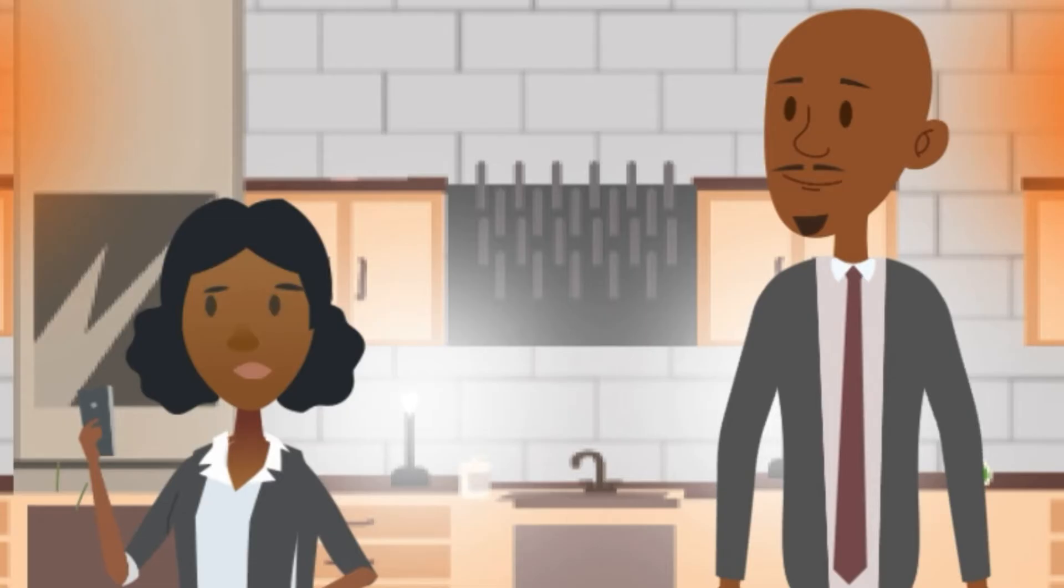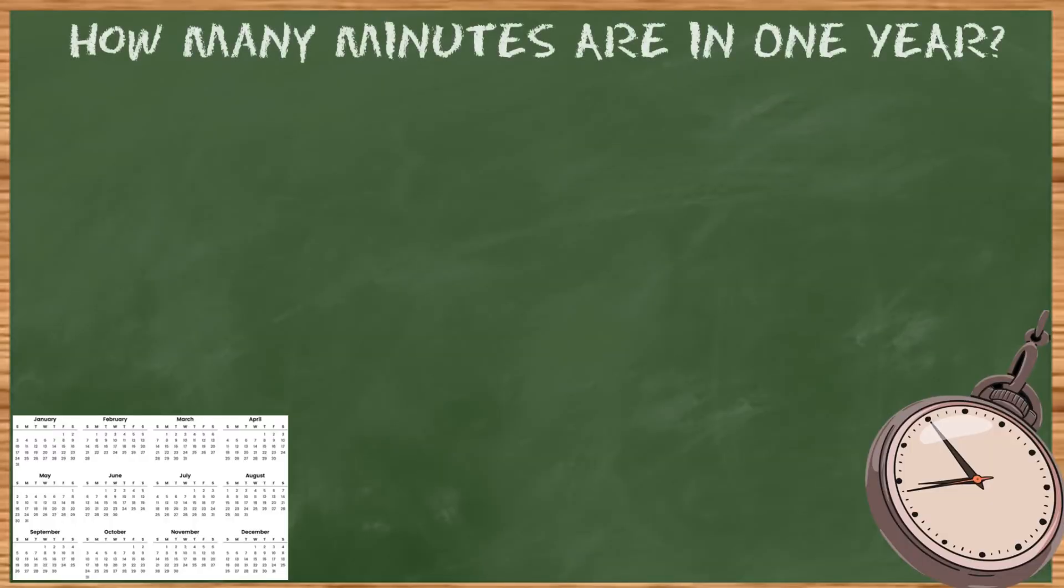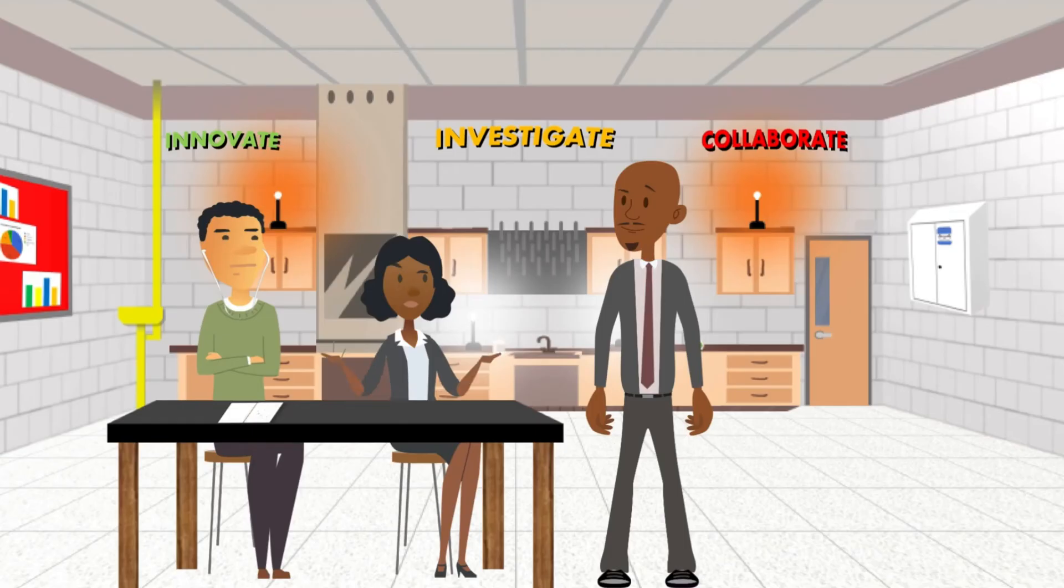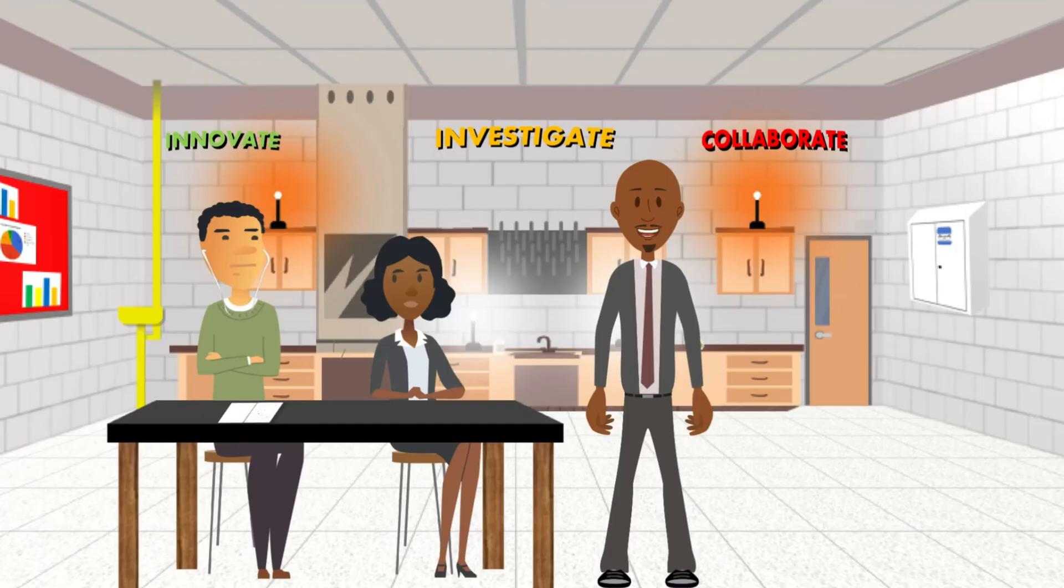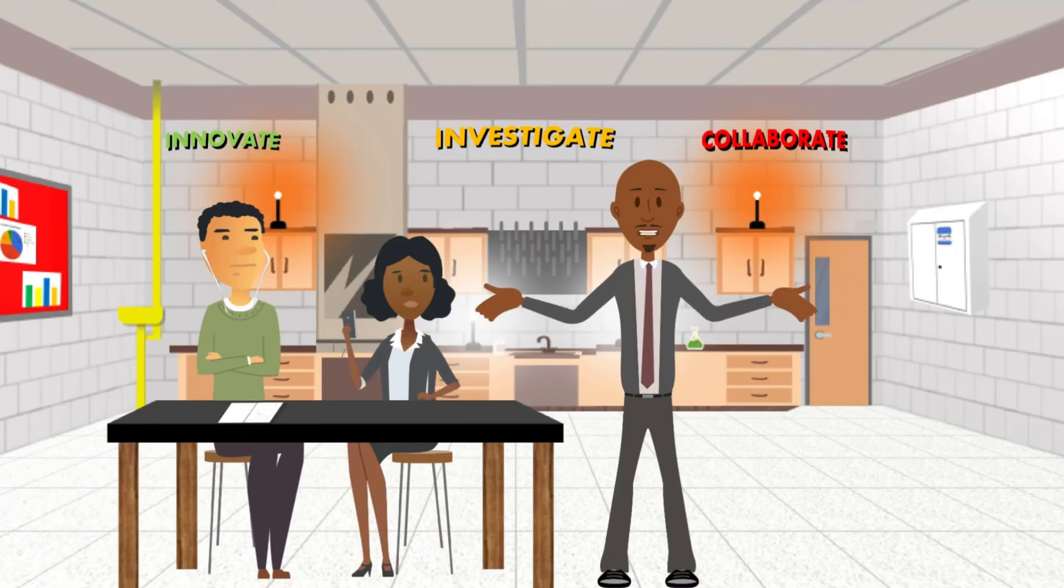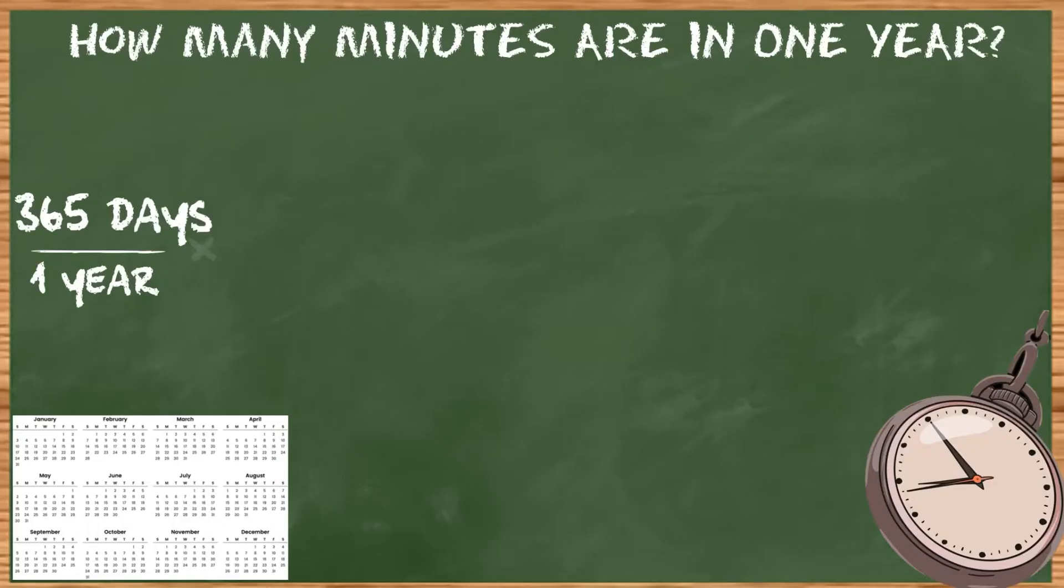So let's start with time, something we all know about. If we needed to figure out how many minutes are in a year, we need to first think about what do we already know that equals one year. Twelve months. Anything smaller than a month? Fifty-two weeks. Anything smaller than a week? Three hundred sixty-five days. Yes. Now we could start with months, but it will be much easier to start with days. We'll get closer to minutes that way. So there are 365 days in one year.